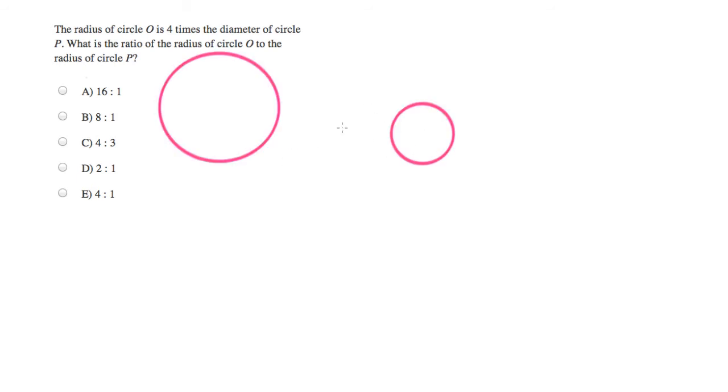So we have one big circle and one small circle. And in the case of the first circle, we're told that the radius, which we'll represent here with this line, is equal to...